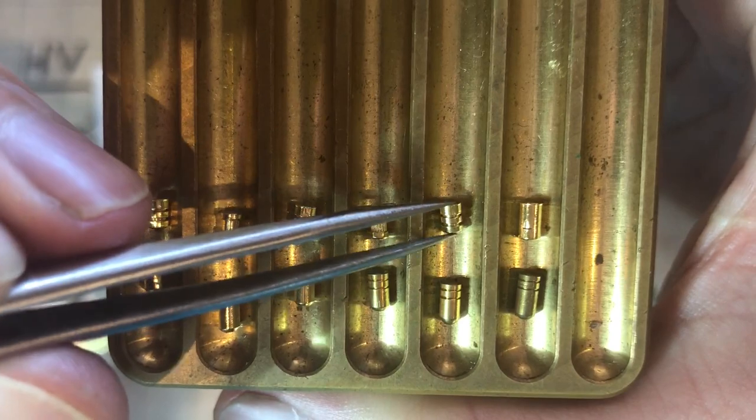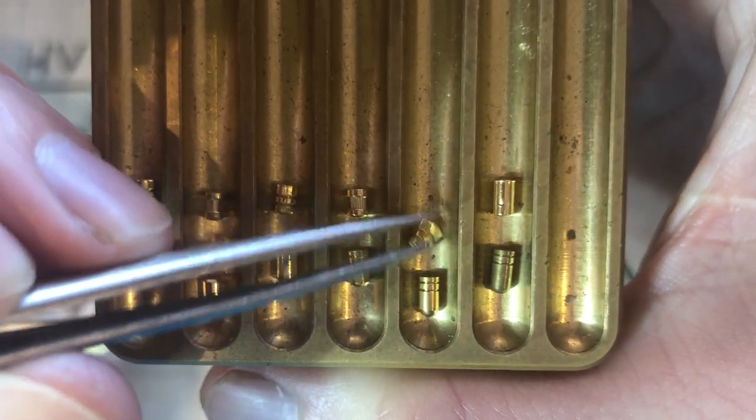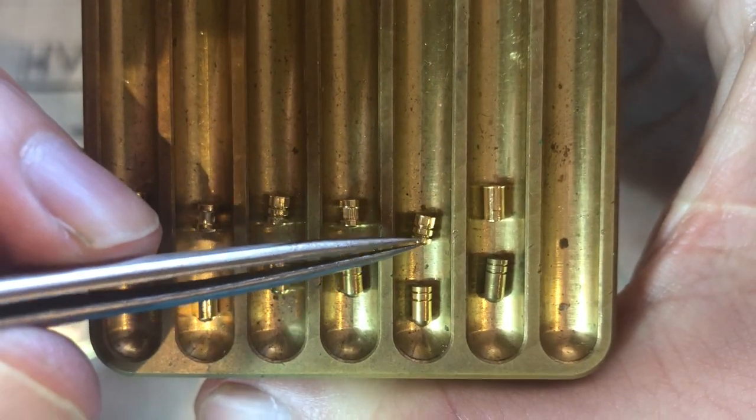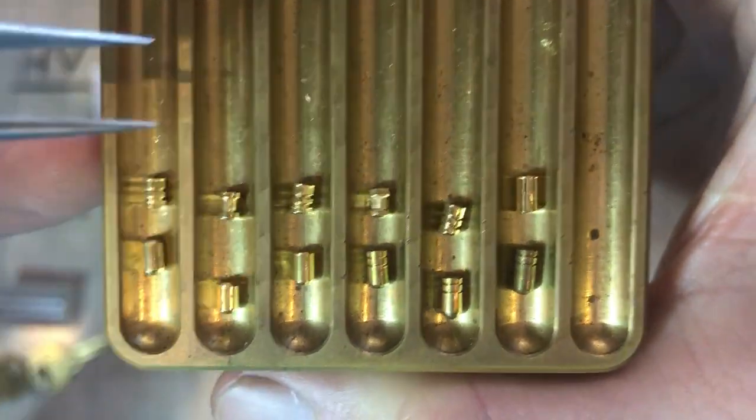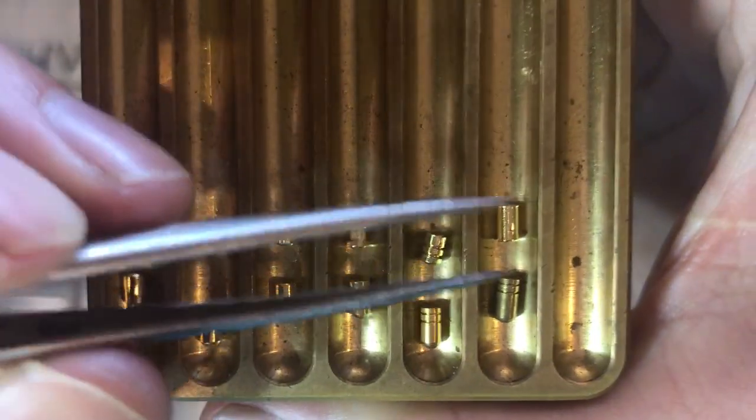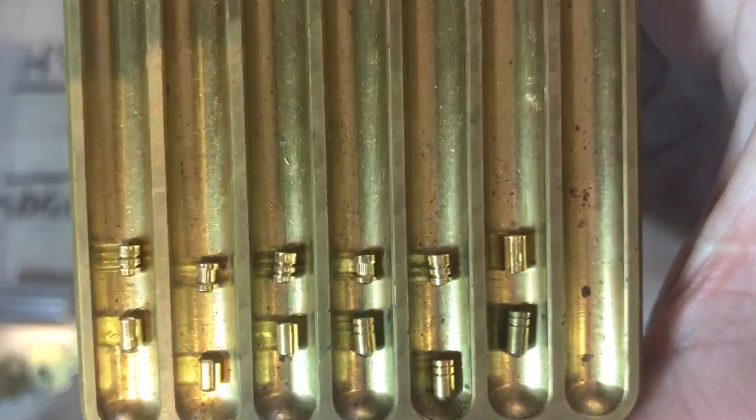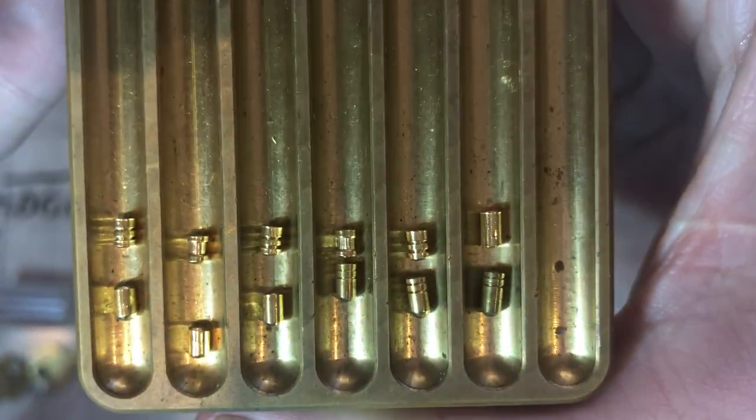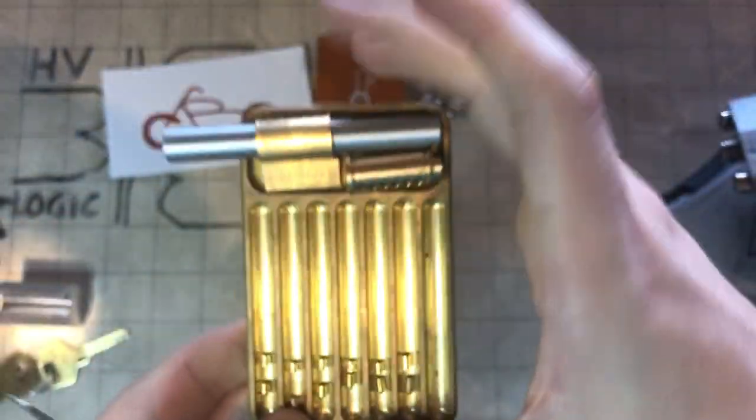So, double serration, two serrations on each. Interestingly, there's a standard pin at the back, which, considering how much it needs to lift, it could have just been a standard pin. It would have made no difference. I mean, a serrated pin. You know, like, anyway. And a couple of overset traps on those key pins.